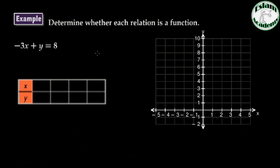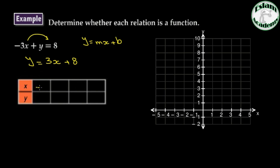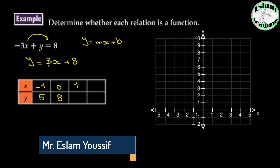Determine whether each relation is a function or not. To represent the relation between x and y, we need to write the equation in the form y = mx + b. By shifting negative 3x to the other side, the relation becomes y = 3x + 8. Using values x = negative 1, 0, and 1: 3 times negative 1 gives negative 3 plus 8 equals 5; 3 times 0 gives 0 plus 8 equals 8; 3 times 1 gives 3 plus 8 equals 11.